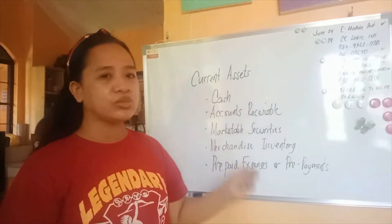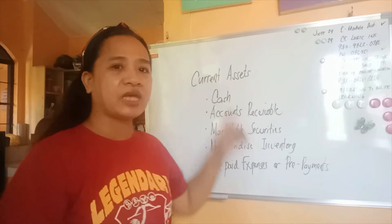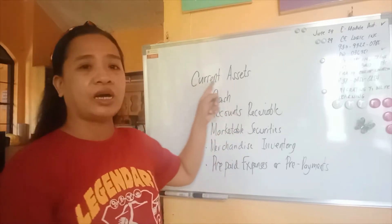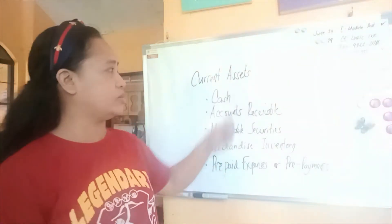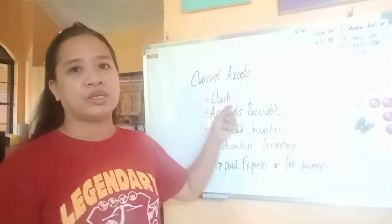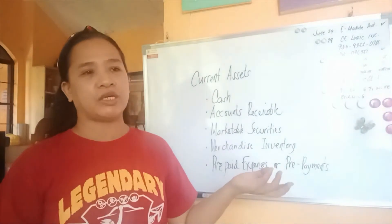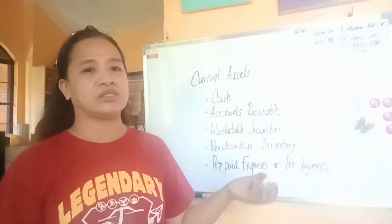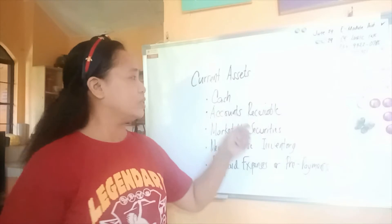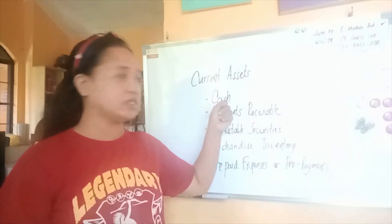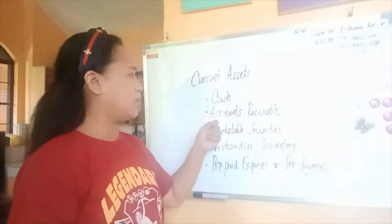What are the differences between those accounts? First thing first, current assets — their original entry are all debits. For example, when you want to start a business, you debit cash and credit capital. So as you can see, cash's original entry is on the debit side.